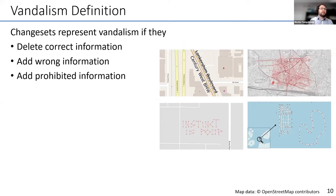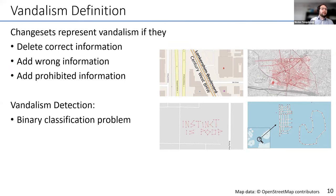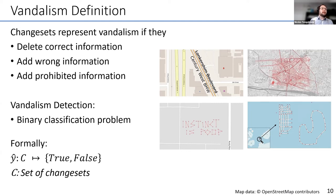Knowing changesets, we can now come up with a definition of vandalism. We say a single changeset represents vandalism if it either deletes correct information (like the deletion in Munich), or adds wrong information (like the imaginary town), or prohibited information like spam or offensive content. We then define vandalism as a binary classification problem — a function that assigns a binary label, true or false, to a single changeset.